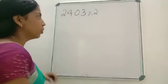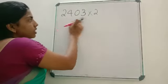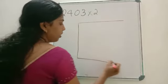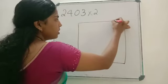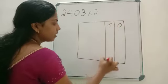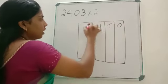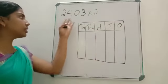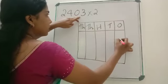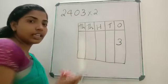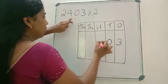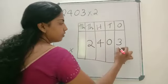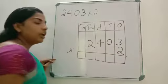2,403 into 2. Let us draw columns and do this. Here it is a 4-digit number, so let us draw 5 columns: ones, tens, hundreds, thousands, and ten-thousands. Now start writing the number from the ones place: ones place is 3 — leave some space in case there is any carryover — the number in the tens place is 0, then 4, then 2. The number we are multiplying by is 2, also starting from the ones place. Now we are going to multiply.